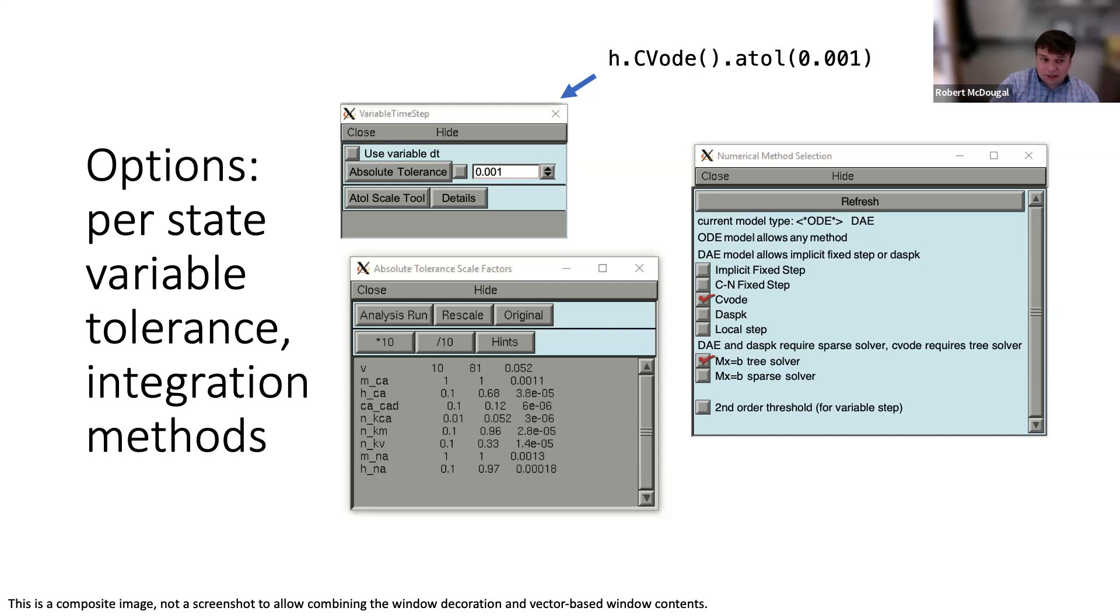The variables and what 0.01 means—whether it's good or bad—depends on the relative magnitude of the values. Fortunately, NEURON allows you to specify that. Graphically, you can hit the atoll scale tool. You don't even have to figure this out. Pop up the atoll scale tool and it opens the Absolute Tolerance Scale Factors dialogue. Hit Analysis Run and it will calculate and generate this table.